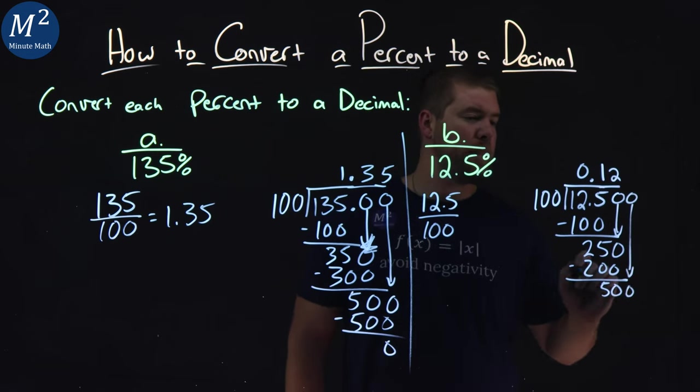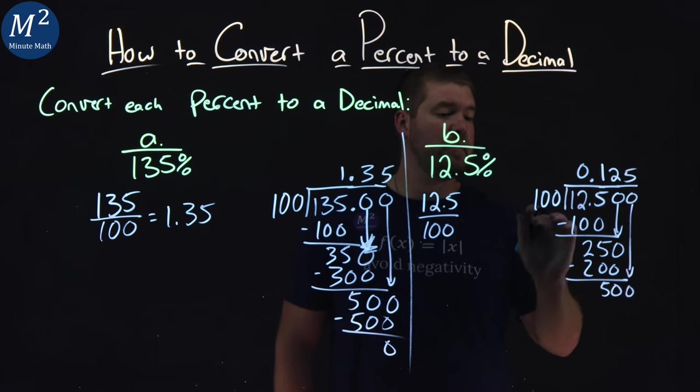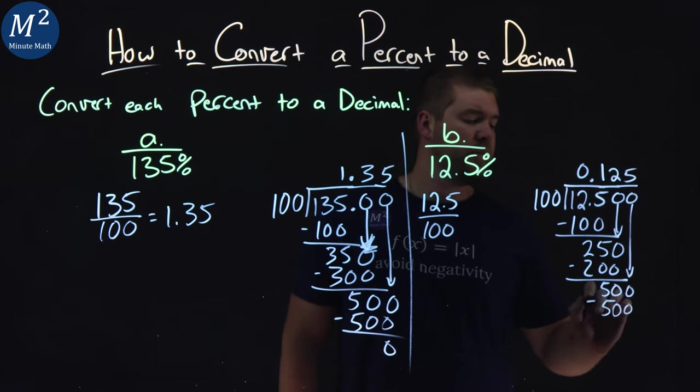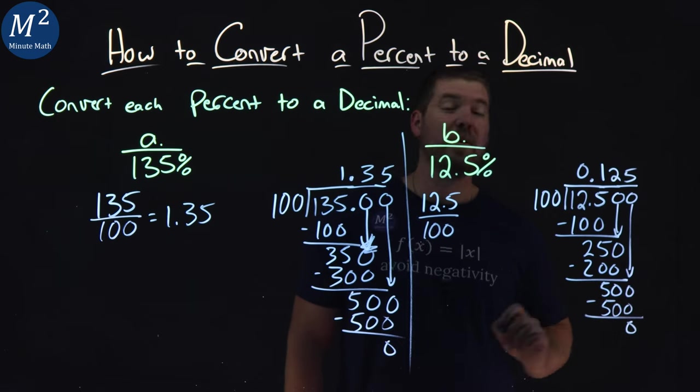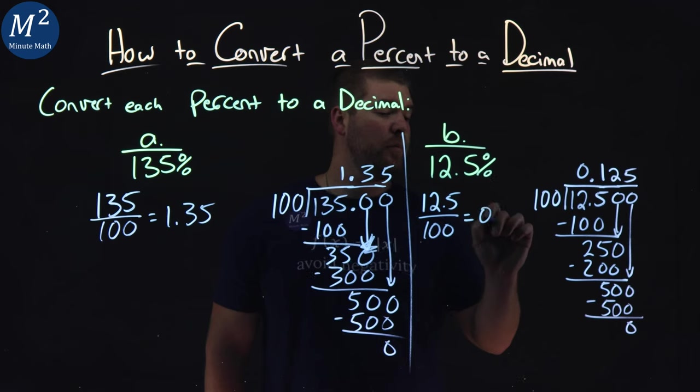Another 0, bring it down. 100 goes into 500, 5 times. 5 times 100, 500. Subtract the two, and we get a 0. So 12.5 over 100 is the same thing as 0.125.